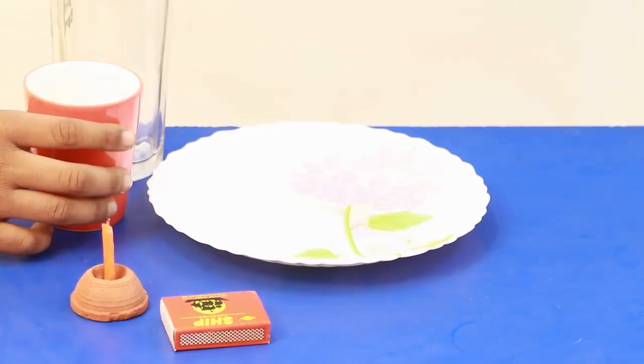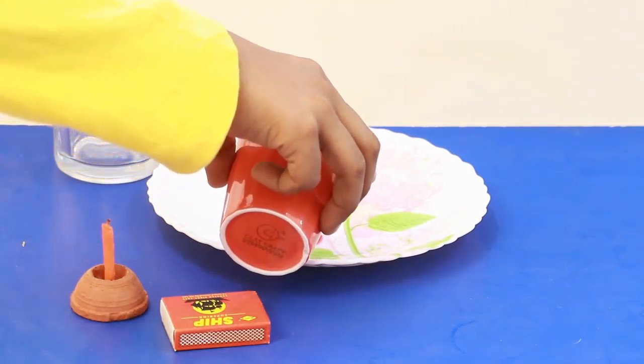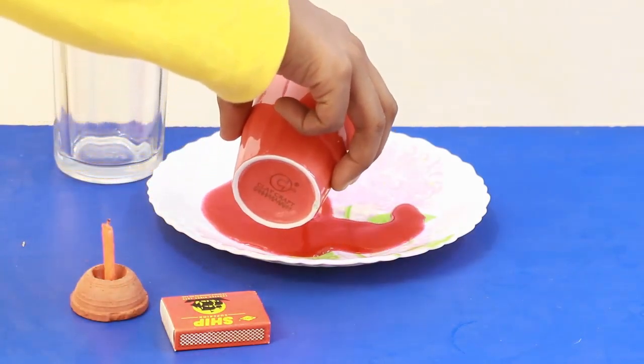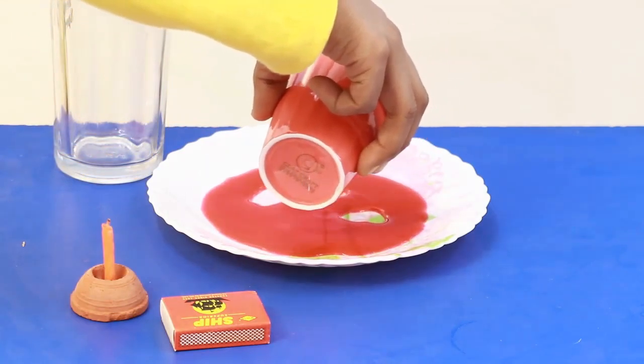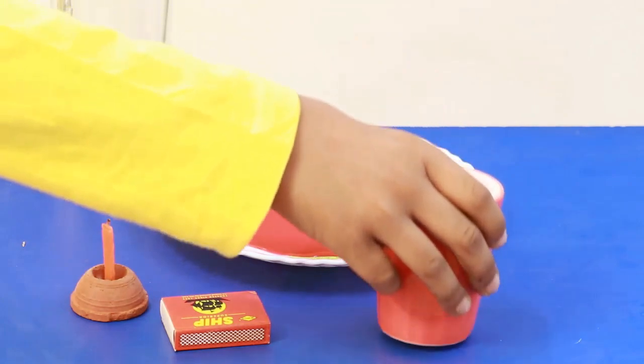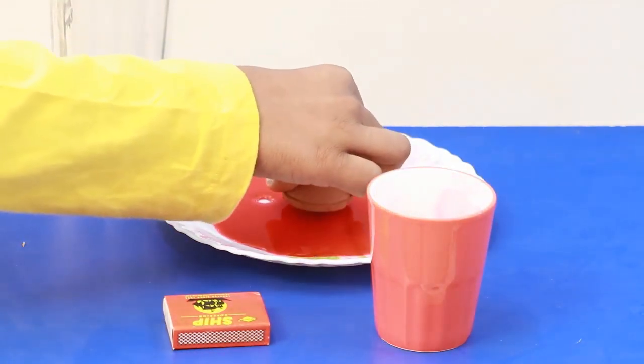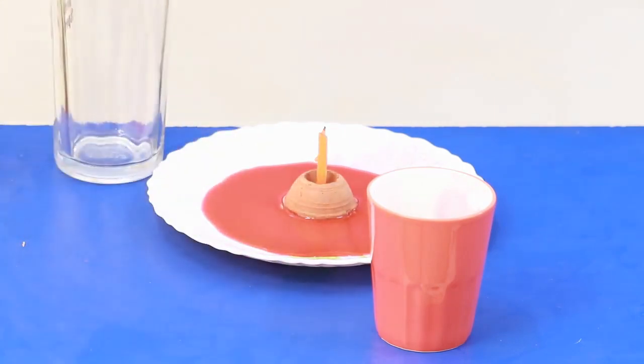So what we will do is we will pour the water in the tray. I recommend using colored water as it will be visible more clearly, and then we will put the candle and then we will light up the candle.